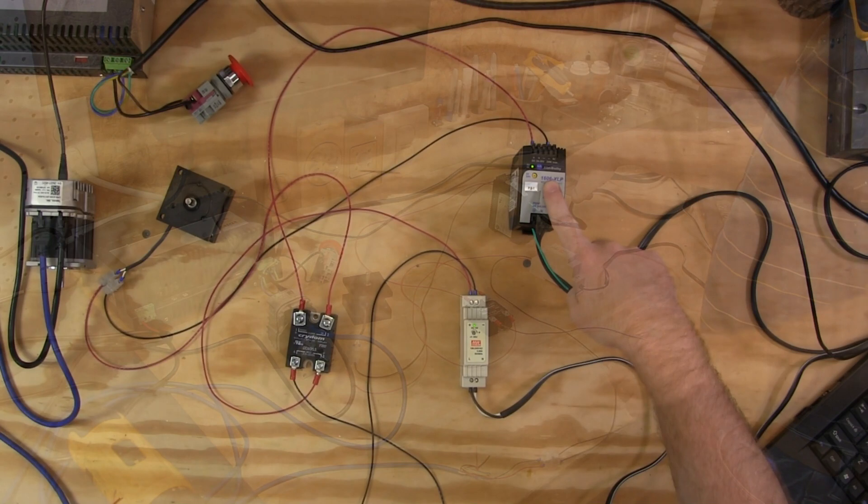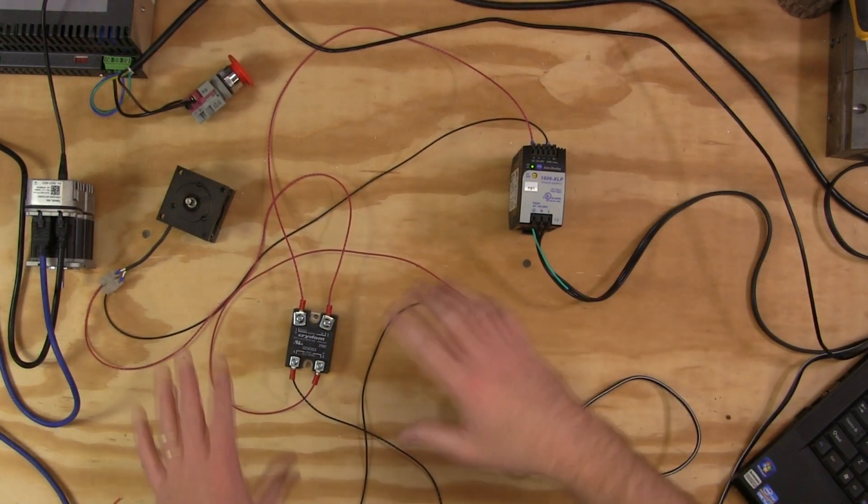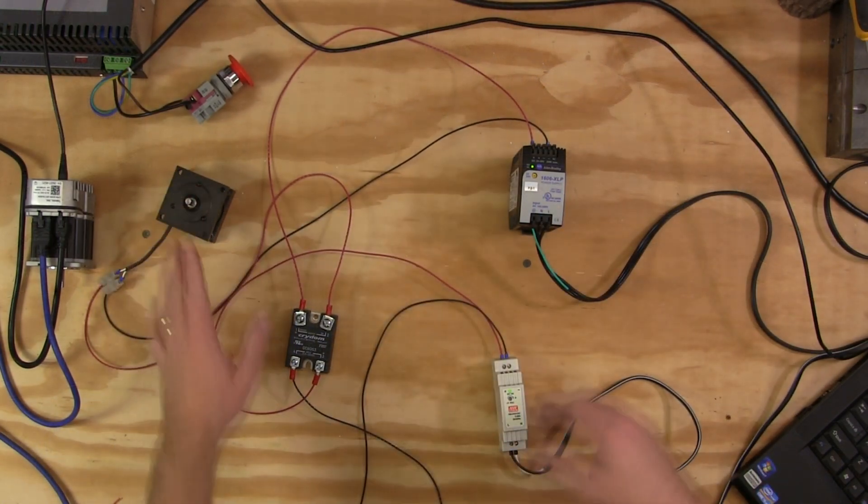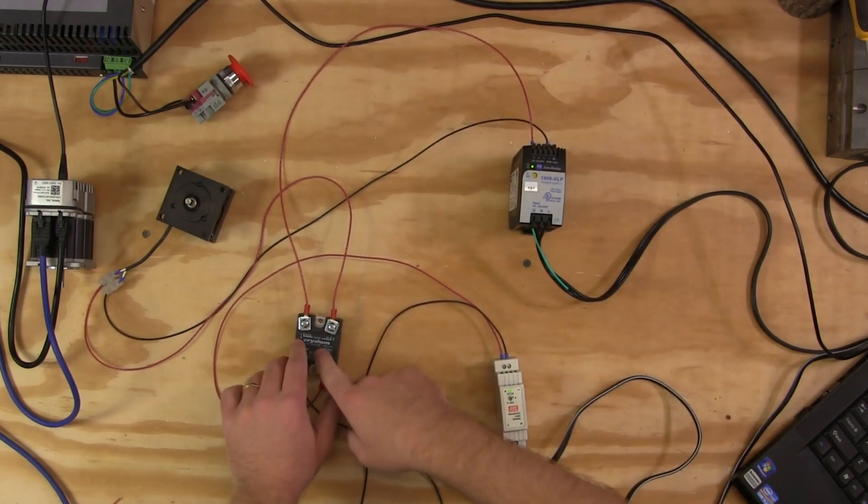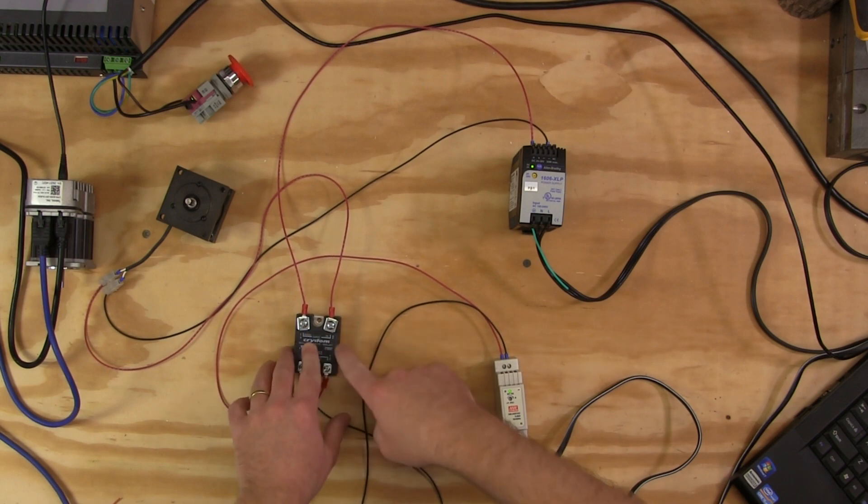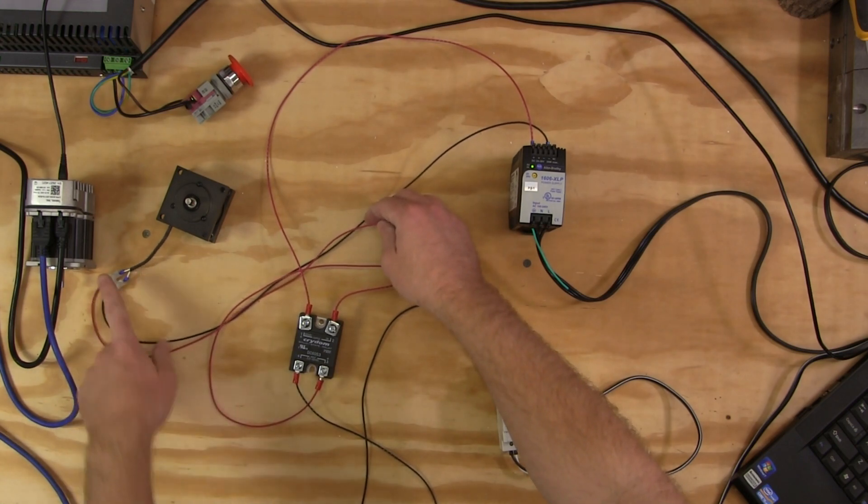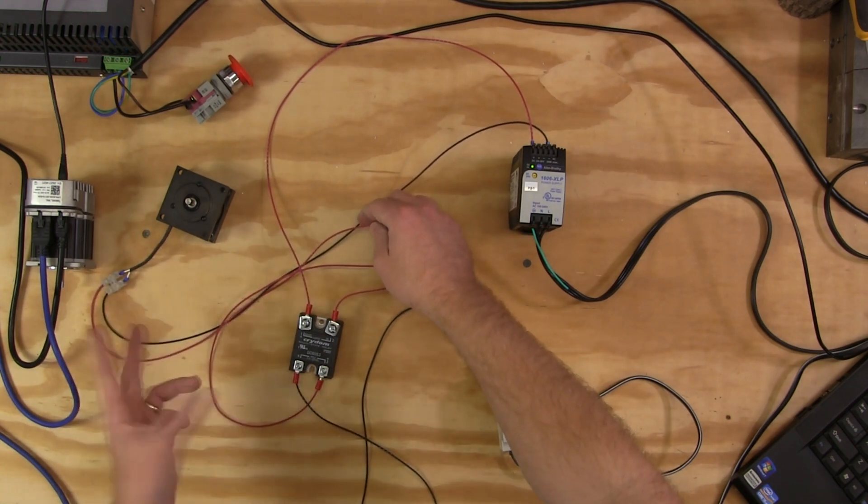Alright, so very quickly the wiring. On the 24 volt DC power supply that actually energizes the brake, the positive 24 coming out goes to the positive leg of the output side of this Crydom relay. The other end of that or position two goes to one leg of the brake. The brake is an electromagnet. It is not polarity sensitive.